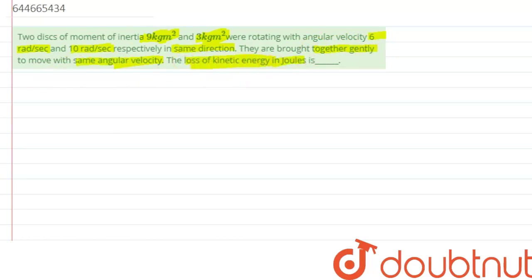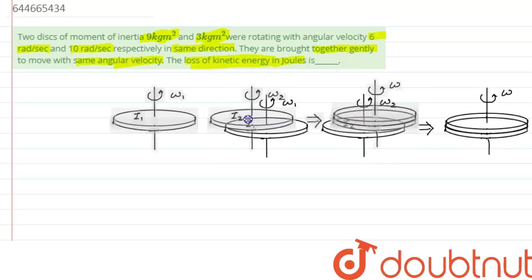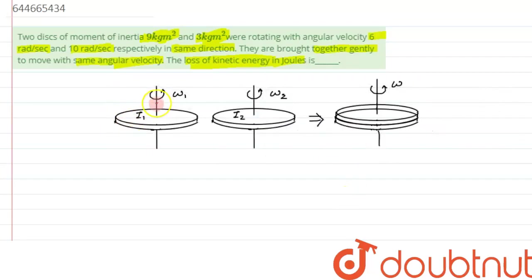We have been given a situation. We can depict two cases over here. In the first case, the disk is rotating with angular velocity ω₁, and the second disk is rotating with angular velocity ω₂ having moment of inertia I₂. In the second part of the question both are combined. This is our second part and this is the first part of the question. We are interested in finding the loss in kinetic energy.